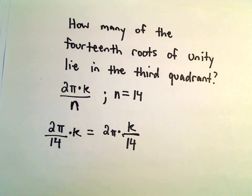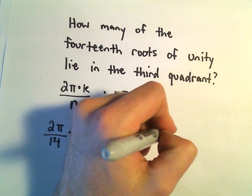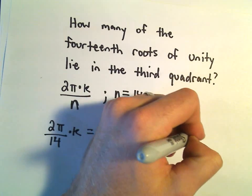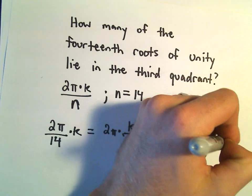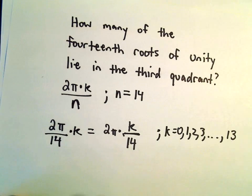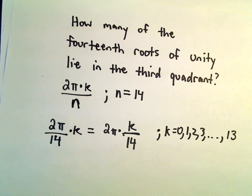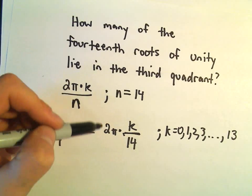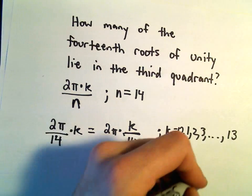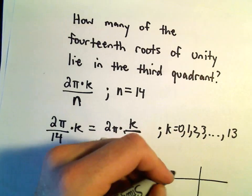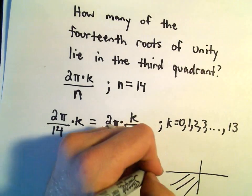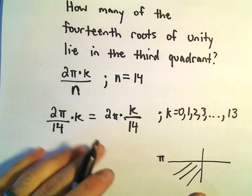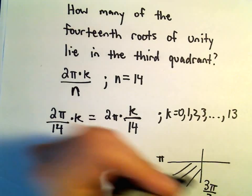This is for k equals 0, 1, 2, 3, up to 13. We do one fewer. I'm thinking, for what values of k will this angle be in quadrant 3? Quadrant 3, we're looking for angles between π and also 3π over 2.